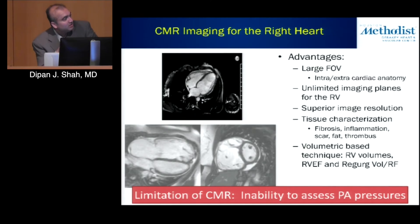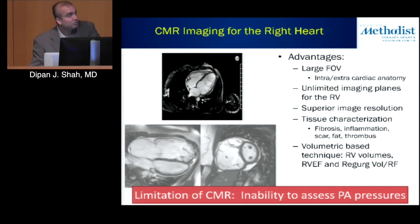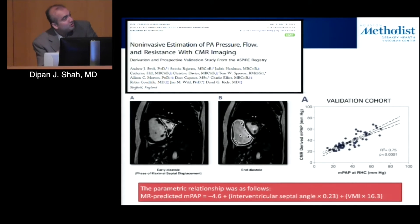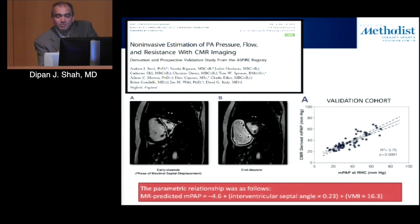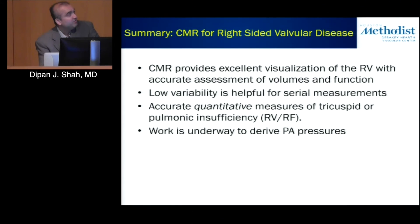Probably the biggest limitation of CMR is its inability to assess pressures. For non-invasive pressure estimation we routinely go to echocardiography for surrogate markers of pulmonary artery pressures. However, there is some emerging data — one publication used RV mass and the angle of septal displacement during systole to derive an equation correlating with pulmonary artery pressures measured at right heart catheterization. This is not yet routine clinical application, but is an area of active investigation.